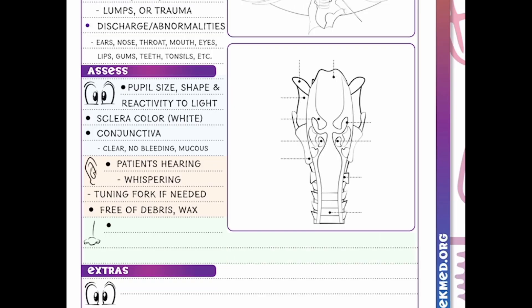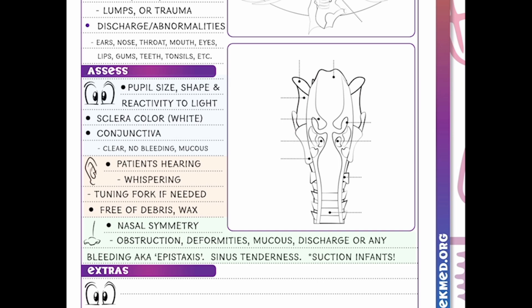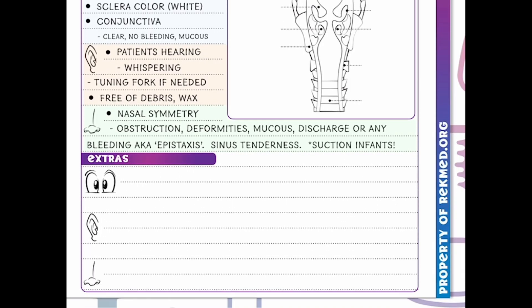We're also going to look in our nares — is there nasal symmetry? Do they have any obstructions, deformities, mucus, discharge, or bleeding? Epistaxis is the word we use for a nosebleed. We'll also check for sinus tenderness. In our infants, we may need to suction out anything blocking them — and when we do, we note whether we're getting a lot of mucus or dry hard boogers.